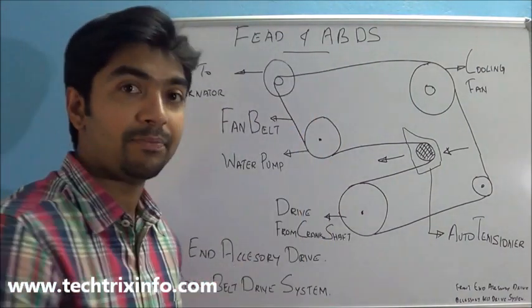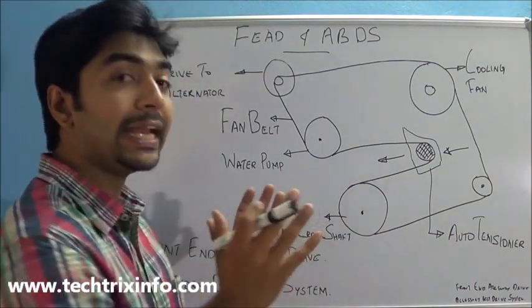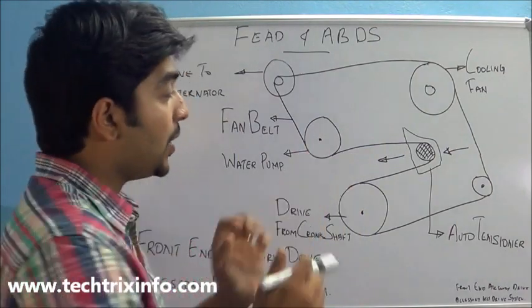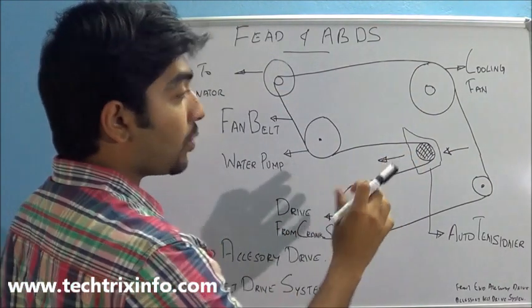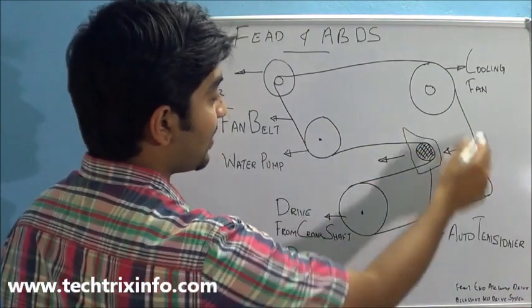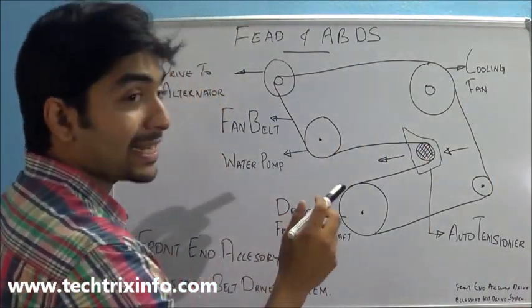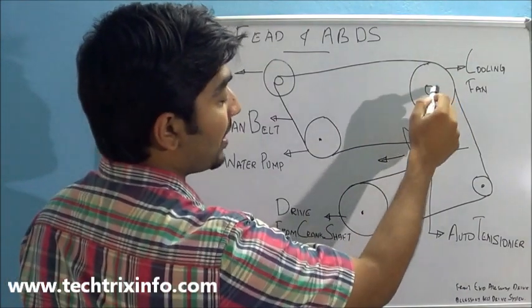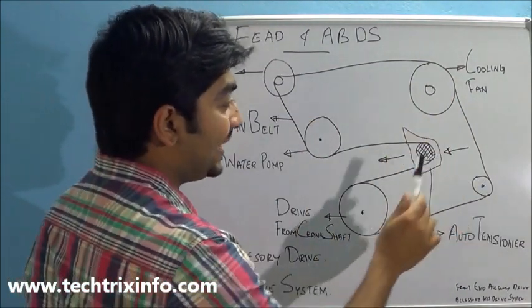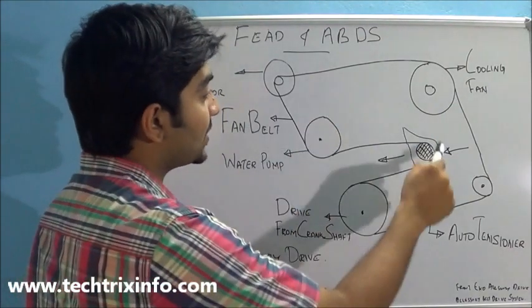Both are the same because if you take an engine from the front side, if you view the engine from the front side, you can see a lot of accessories on the front side of the engine connected with a belt. And this belt is called the fan belt because that gives drive towards the cooling fan also. So these accessories get their drive through this belt.